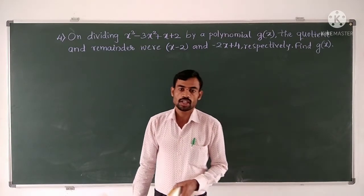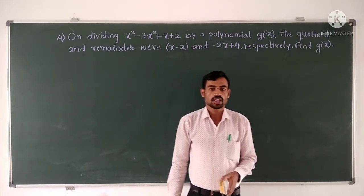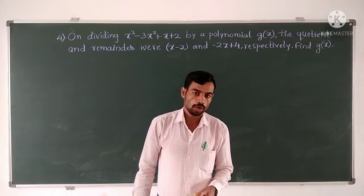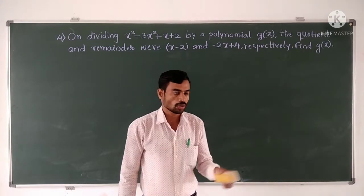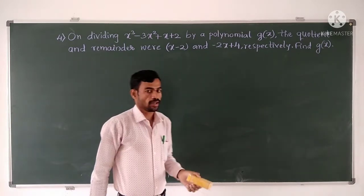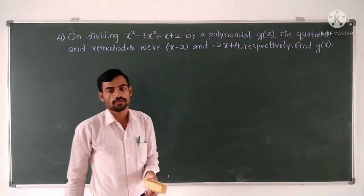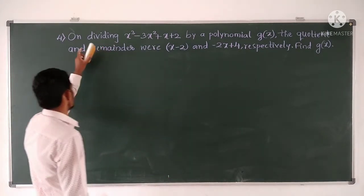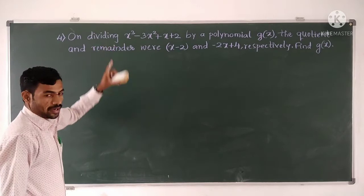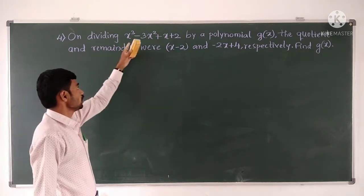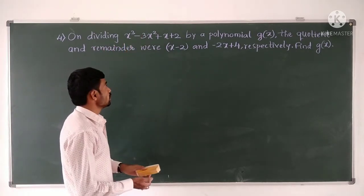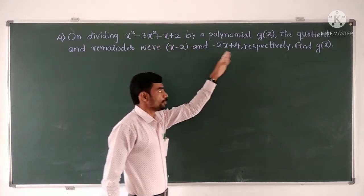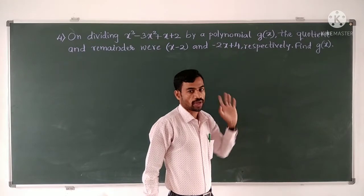The first three questions we solved are related to the division algorithm for polynomials, and the fourth question is also related to the division algorithm for polynomials. The question given is: on dividing X³ minus 3X² plus X plus 2 by a polynomial G of X,